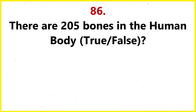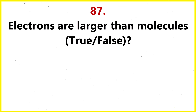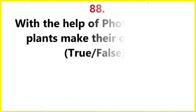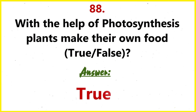There are 205 bones in the human body — true or false? False. 206 bones are there in the human body. Electrons are larger than molecules — true or false? False. With the help of photosynthesis, plants make their own food — true or false? True.